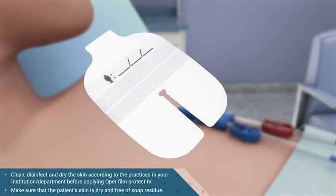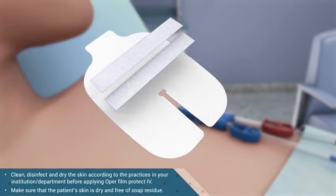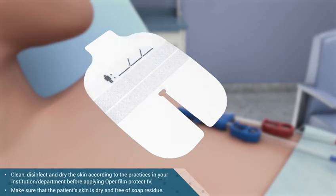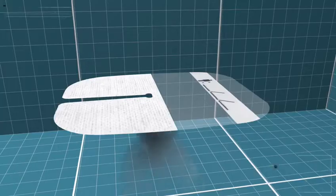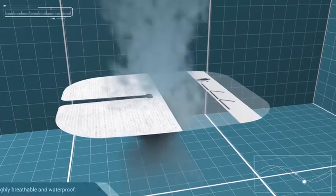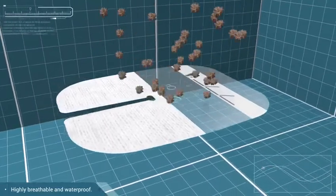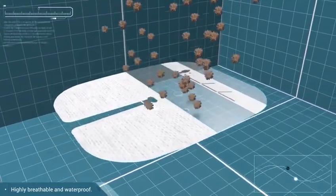It features two non-woven fabric strips that ensure better fixation of the medical device and one printed cellulose adhesive strip on which to make a note of the dressing placement date and other relevant information. This film provides a high level of gas permeability and is impermeable to liquids, bacteria, and viruses.